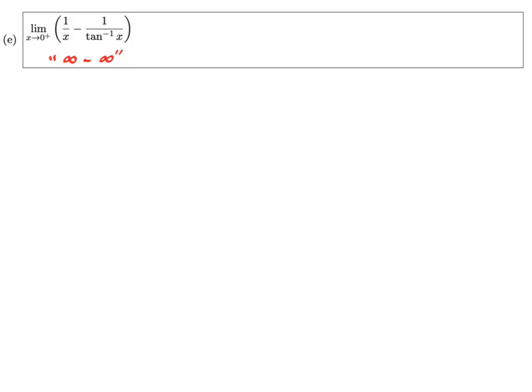So taking the least common denominator and combining, subtracting, we get limit as x approaches zero from the right of tan⁻¹x minus x all over x times tan⁻¹x.